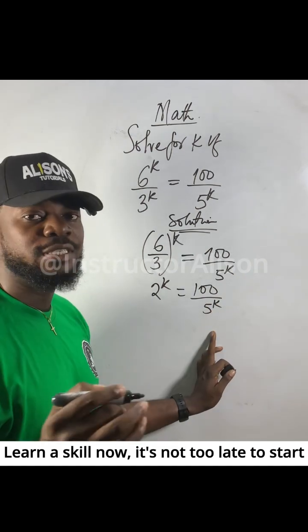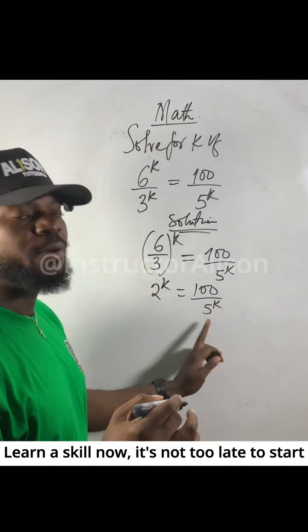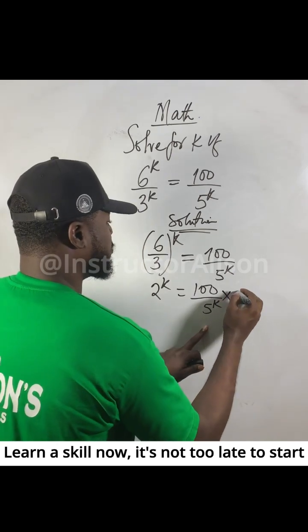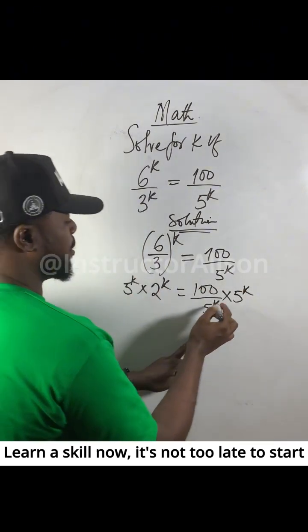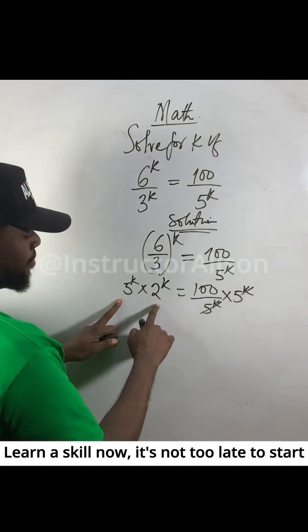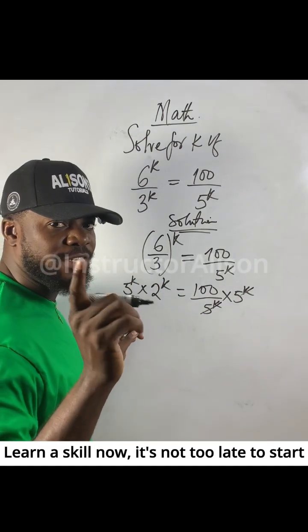To move this term, multiply both sides by 5 to the power of k. These will cancel.